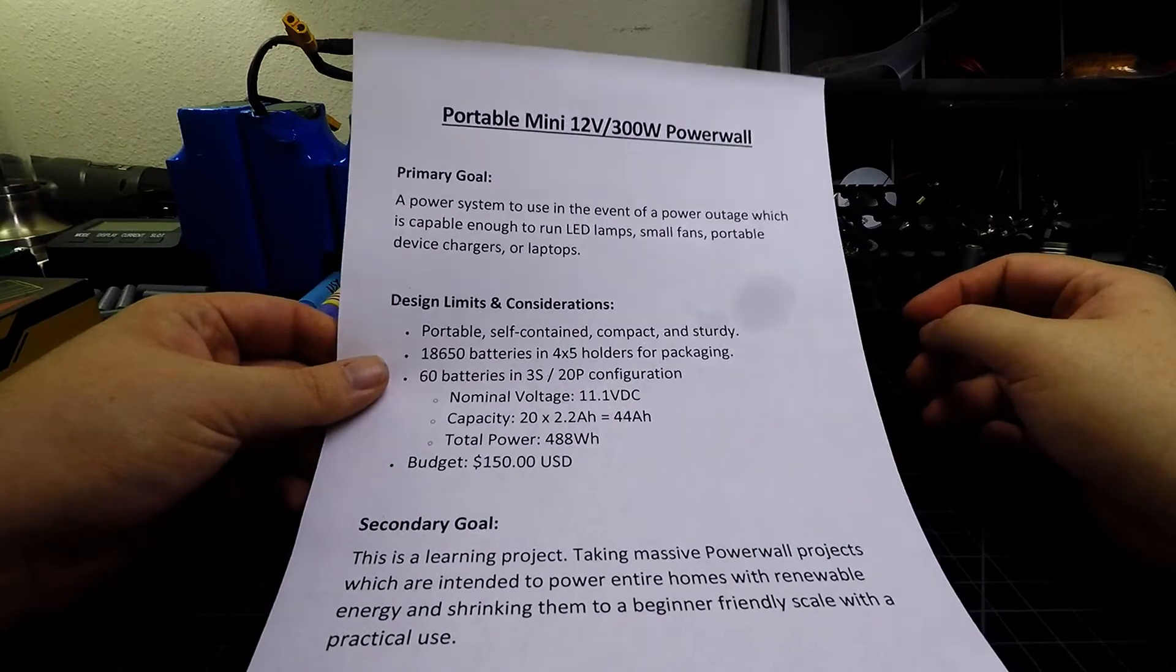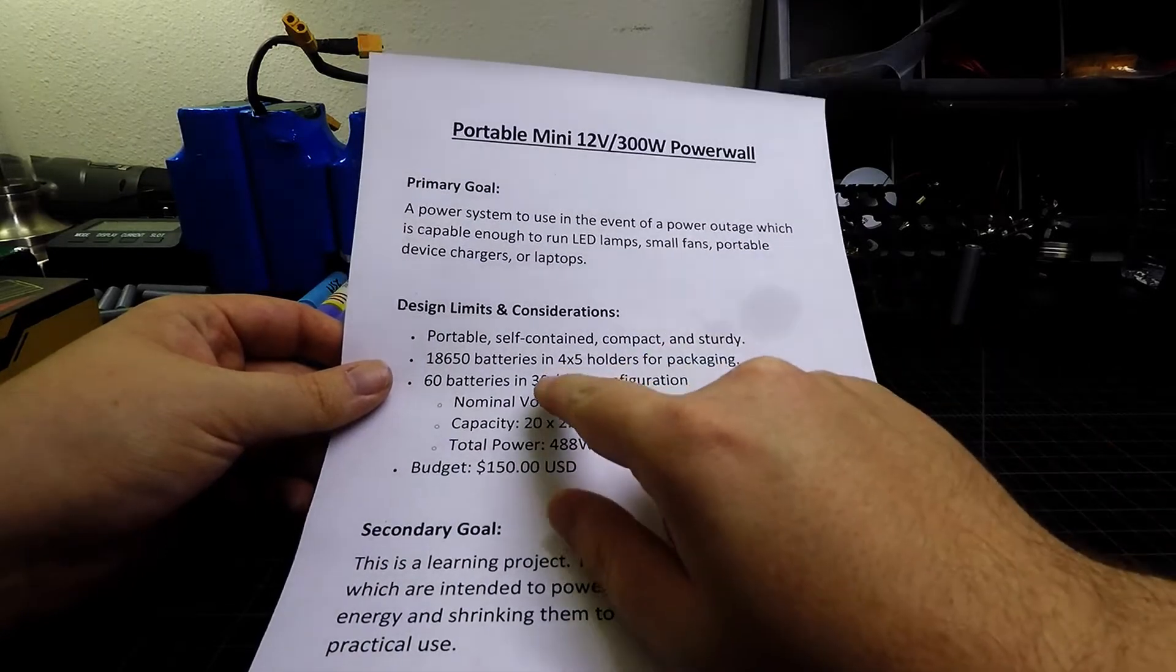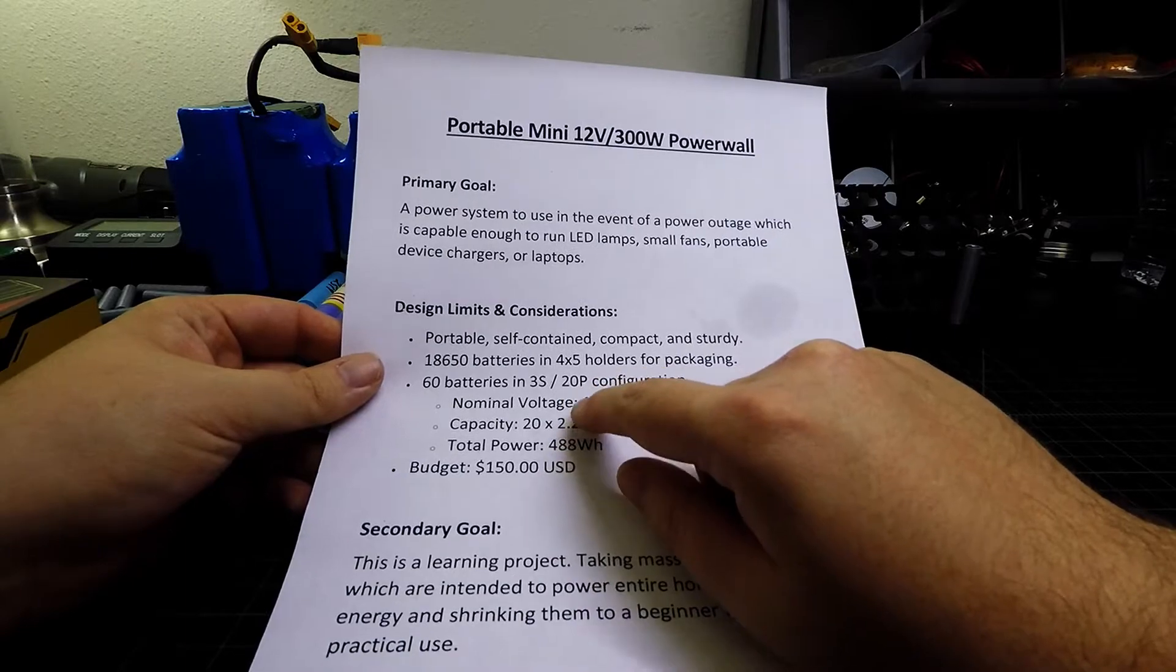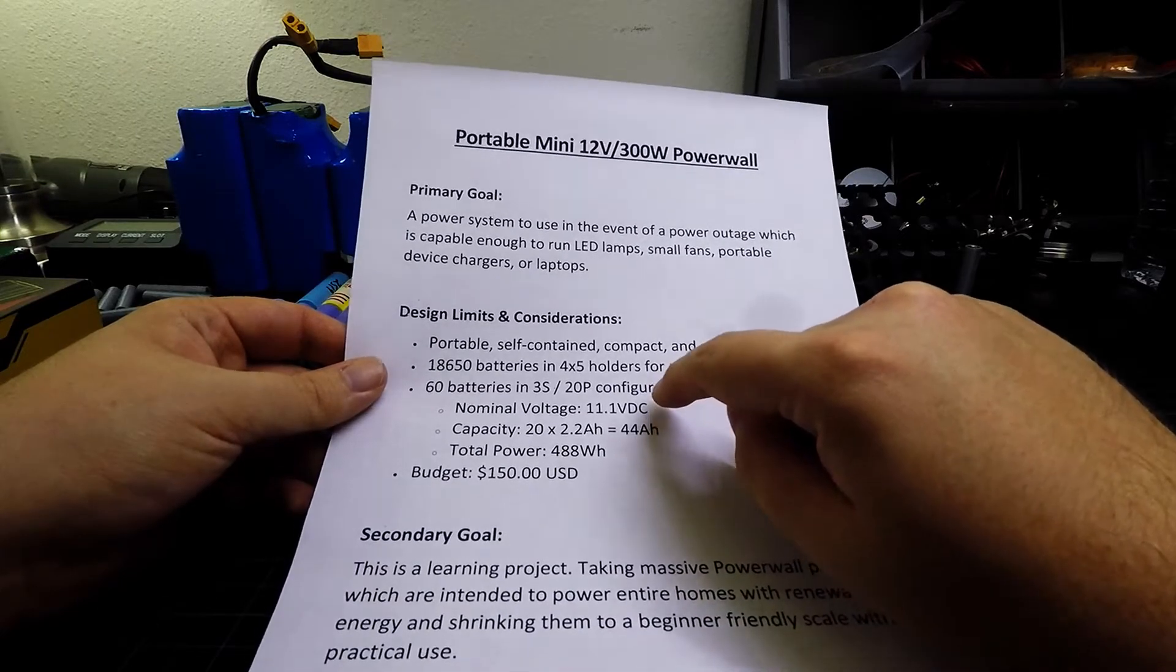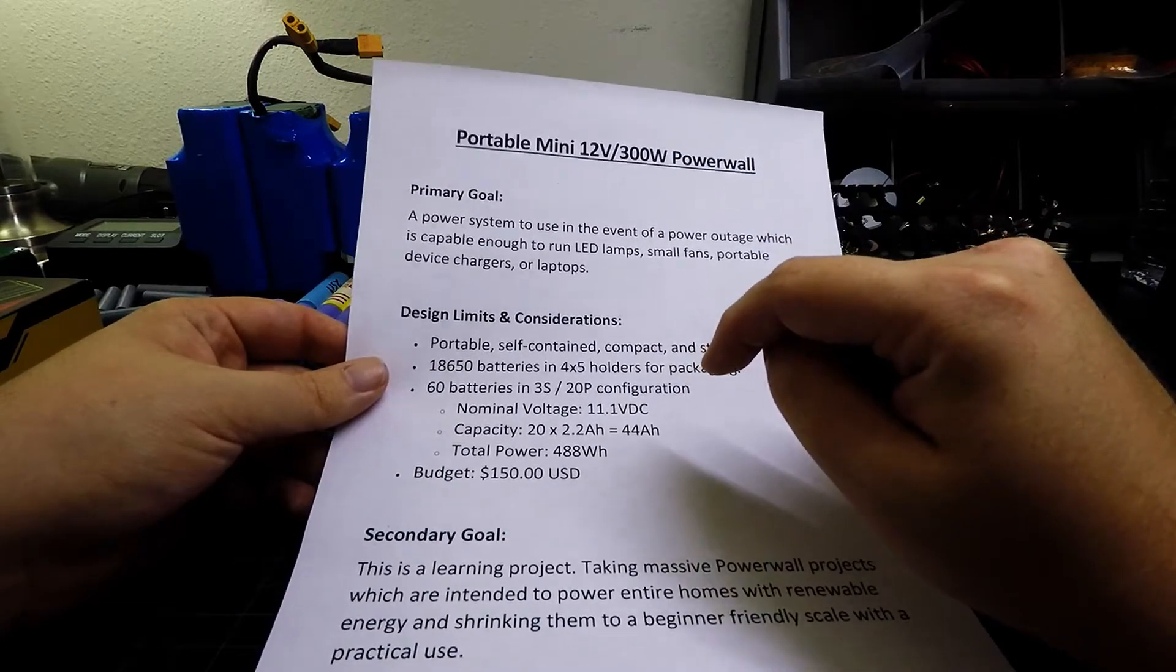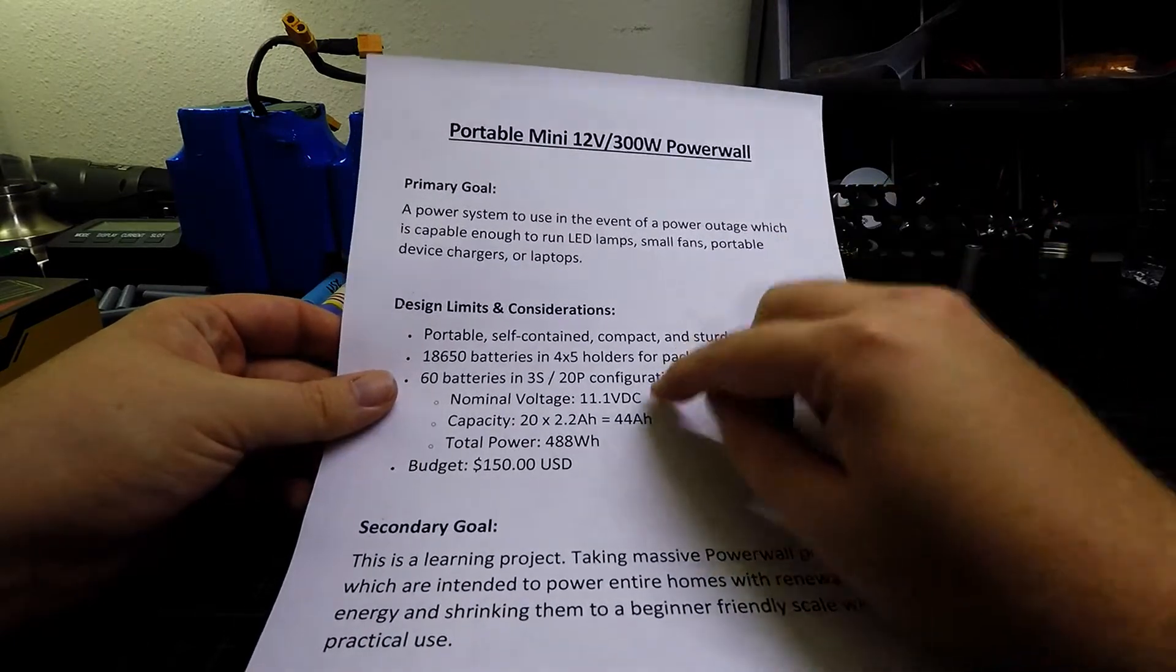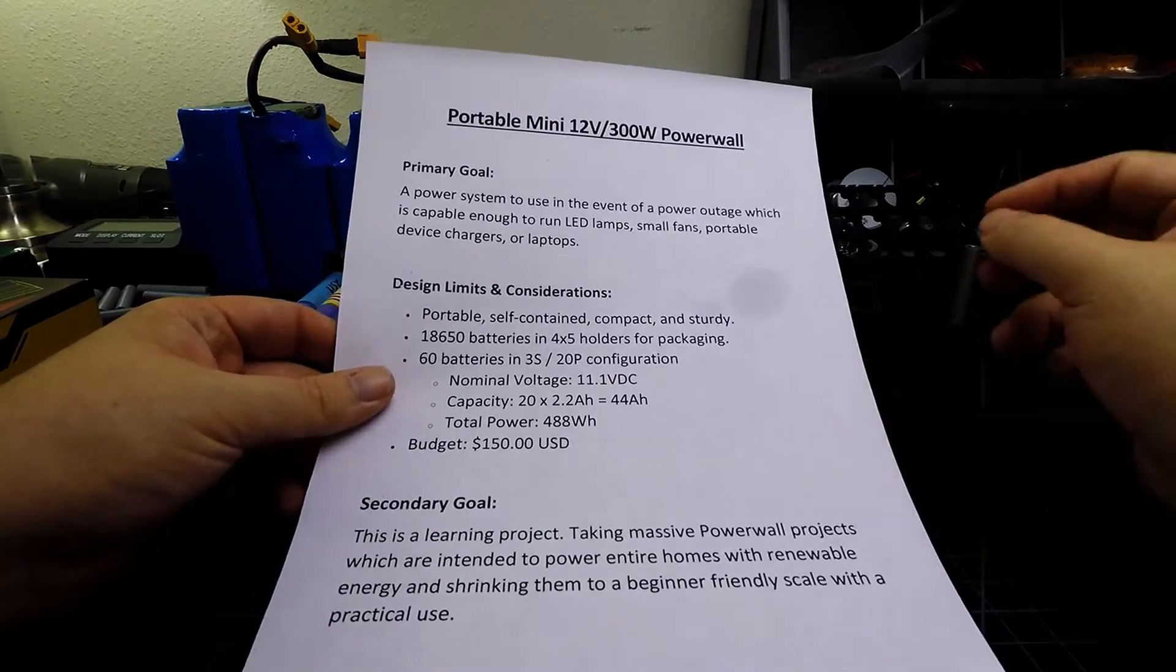Now this project will be using 60 batteries in a 3S 20P configuration, so that's 3 series 20 parallel, and what that's going to give us out of each battery that is a nominal 3.7 volts, you multiply that by 3 because there's 3 in series, that's going to give you a nominal voltage of the system at 11.1 volts. This is where the batteries will spend the majority of their time while in use and actually providing power to things, but once they're fully charged they are actually slightly over 12 volts and I think low volt cutoff is somewhere around 10 volts. So we just call it nominal voltage at 11.1 volts because that's where the batteries spend the majority of their time at with that voltage when they're in use.